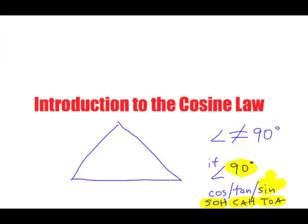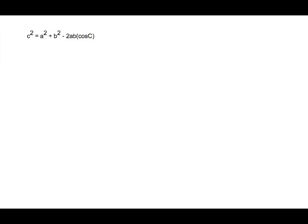But if none of the angles are 90 degrees, you may be using the cosine law, if you're not using the sine law. So let's look at what the cosine law is. Here is the equation: C squared is equal to A squared plus B squared, subtracted by 2AB cosine C.